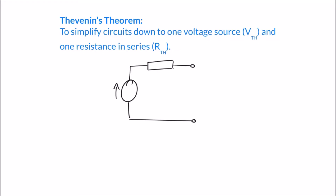One voltage source on the left hand side — that's the symbol for a DC voltage source which we call the Thevenin voltage — and one resistance in series, the Thevenin resistor. The circuit is an open circuit with two output terminals on the right hand side. The theorem says we can take more complicated circuit networks and simplify them down to just these two components, and they'll have the same operational behaviour as the original circuit. They should be equivalent to one another.